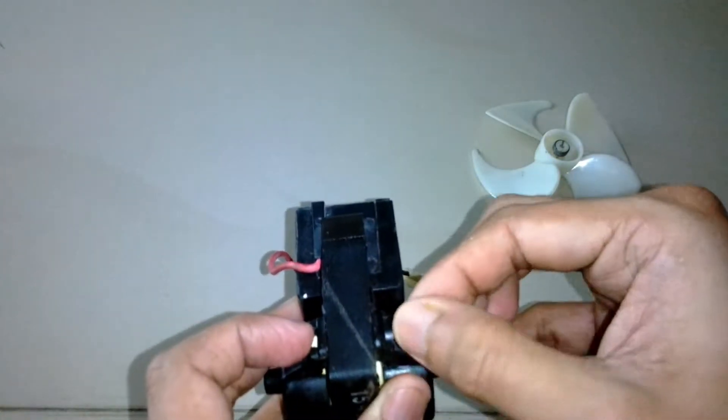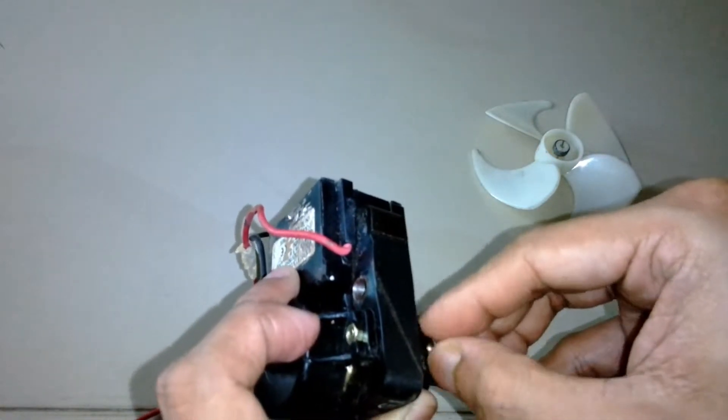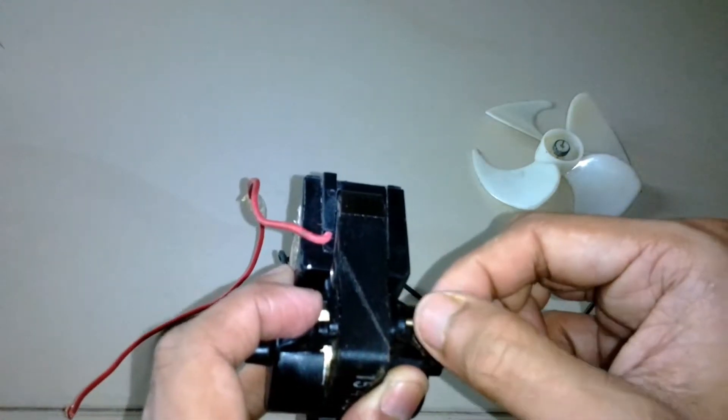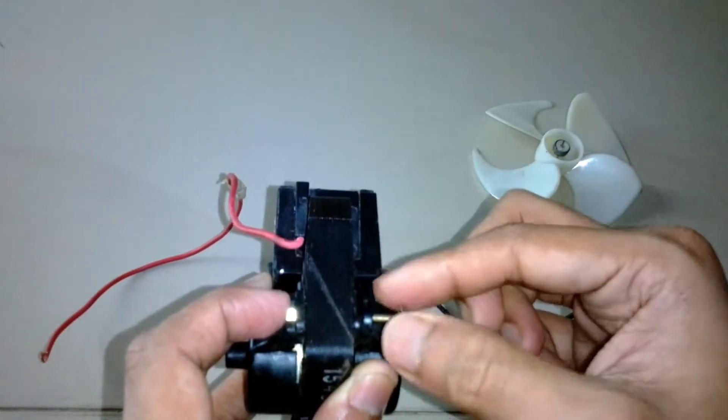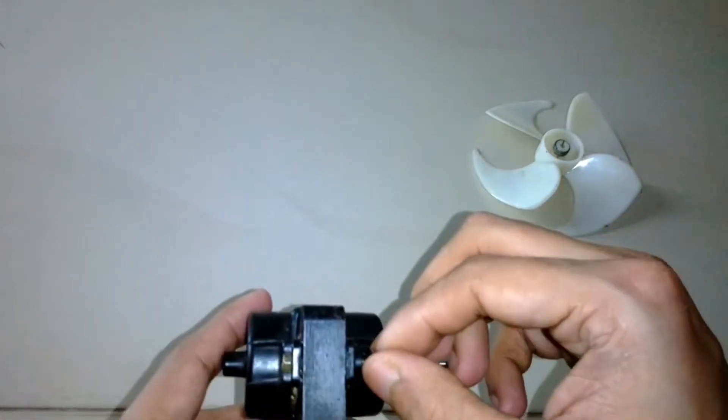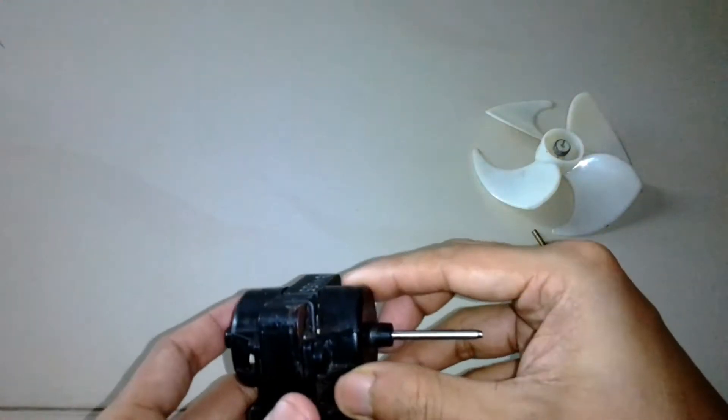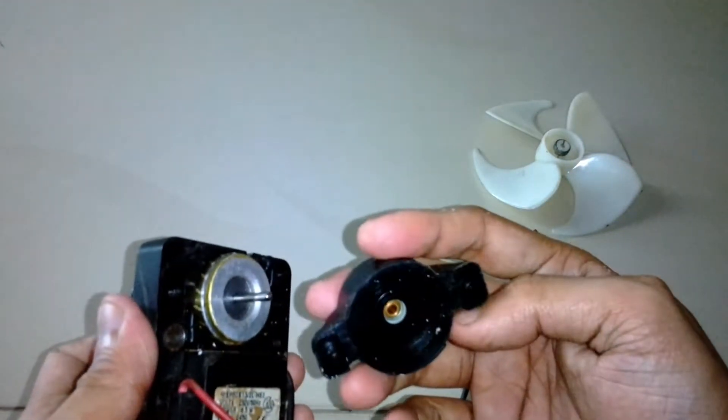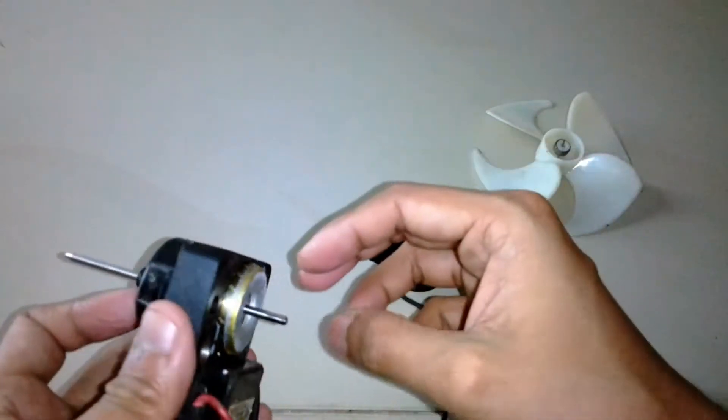After both screws are open, gently pulling the pieces apart, it comes out easily and you can see the rotor inside.